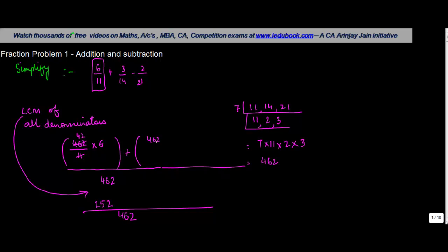Plus 462, the denominator divided by the denominator of the second fraction, 14 into the numerator. So if you cancel out 14 and 46, 3 times 14 is 42, 46 minus 42 is 4, so you get 33. 33 into 3 is 99. There is a plus sign here, you put in plus and then 99.